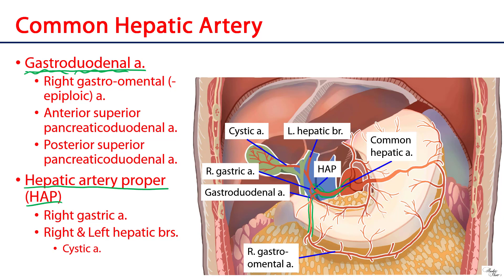There are several branches of the gastroduodenal artery to note: we've already mentioned the right gastroomental artery, which serves the stomach along the greater curvature as well as the greater omentum. There are also superior pancreaticoduodenal arteries — a posterior superior pancreaticoduodenal artery and an anterior superior pancreaticoduodenal artery. These superior pancreaticoduodenal arteries serve the duodenum and the head of the pancreas, and form important anastomoses with branches of the superior mesenteric artery, which we'll discuss towards the end of this video.